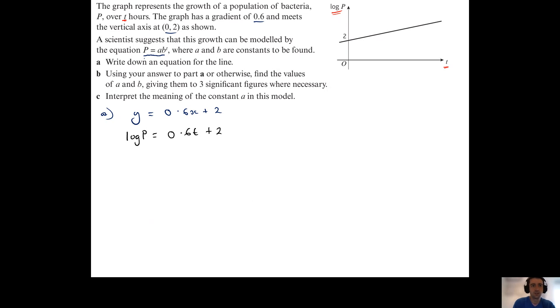What we're now being asked to do is to find the values of a and b, giving our answer to three significant figures. That means we're going to have to turn the equation that we've found in part a into the form p equals a b to the power of t.